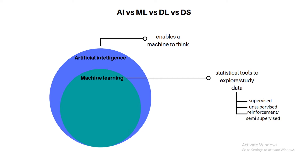I am talking about supervised machine learning techniques. In supervised machine learning, we work with features — for example, height and weight — and we classify the data. We train our supervised machine learning model. Supervised machine learning uses labeled data where we already know the outcome.